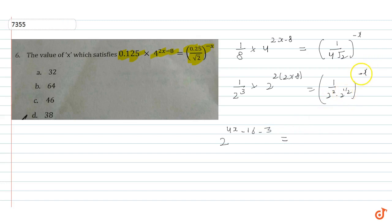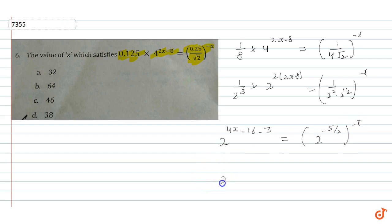The power on top is minus x, so bringing it up we get 2 to the power minus 5 by 2 times minus x. Combining the left side exponents: minus 3 plus 4x minus 16 gives 2 raised to power 4x minus 19. The right side becomes 2 raised to power 5 by 2 times x.